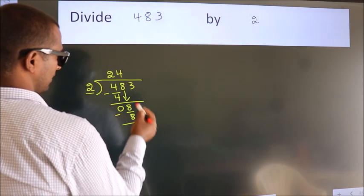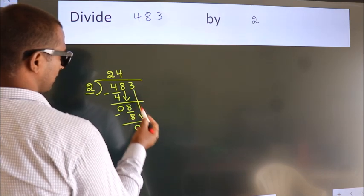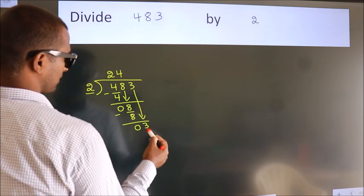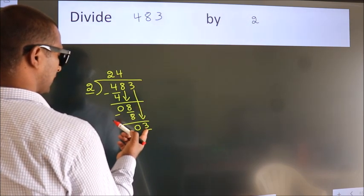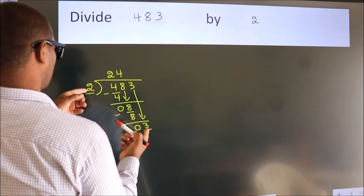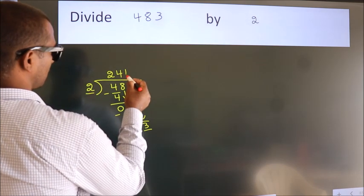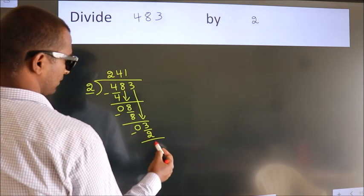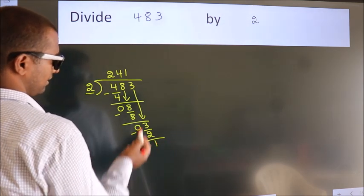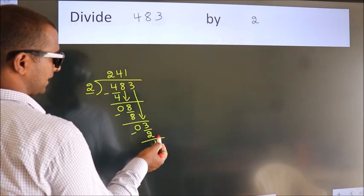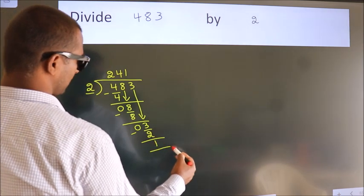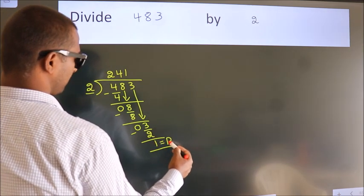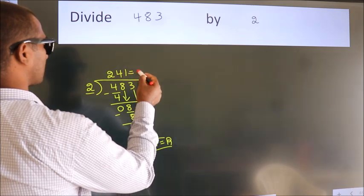After this, bring down the beside number, so 3 down, so 3. A number close to 3 in 2 table is 2 1s, 2. Now, we subtract, we get 1. No more numbers to bring it down. So, we stop here. This is our remainder. This is our quotient.